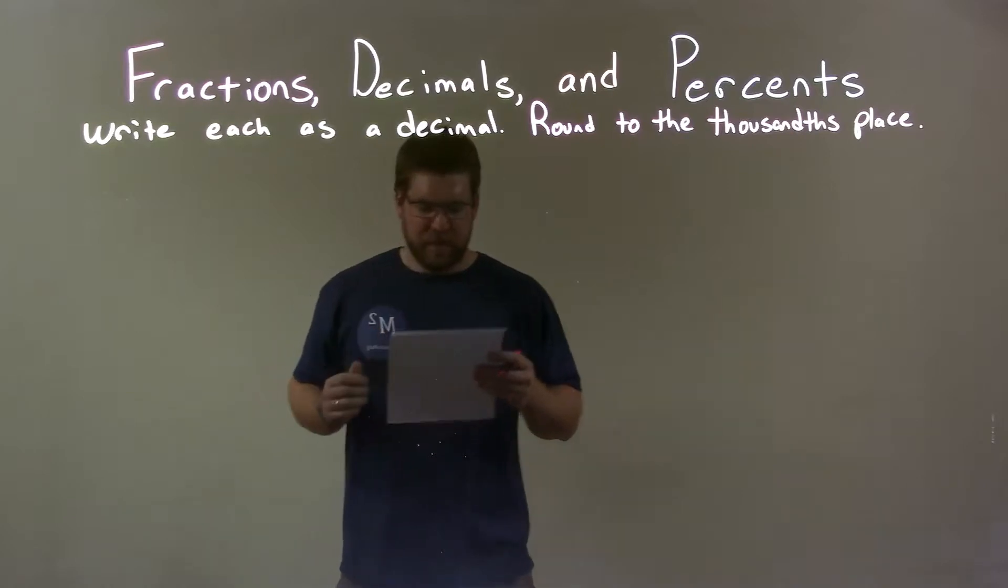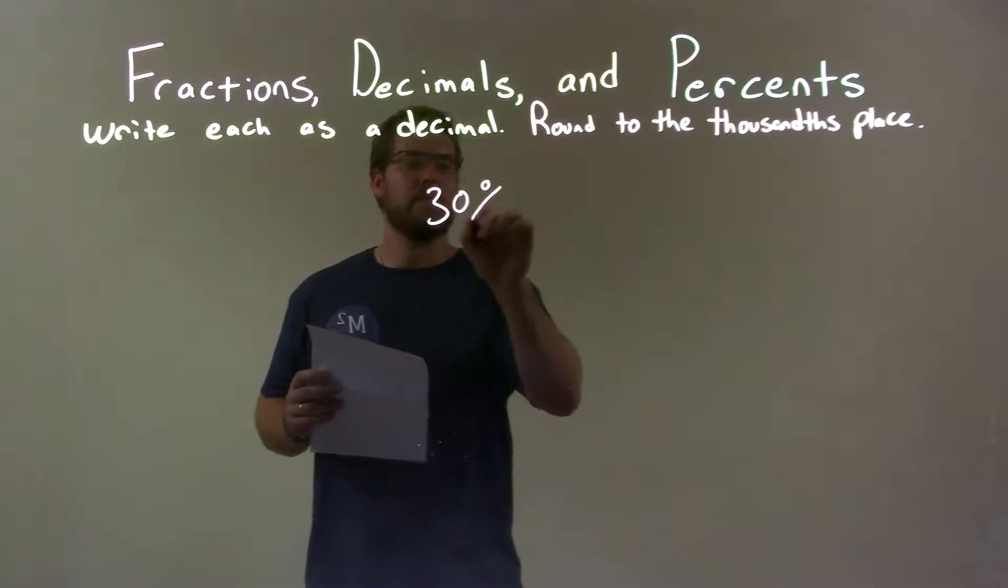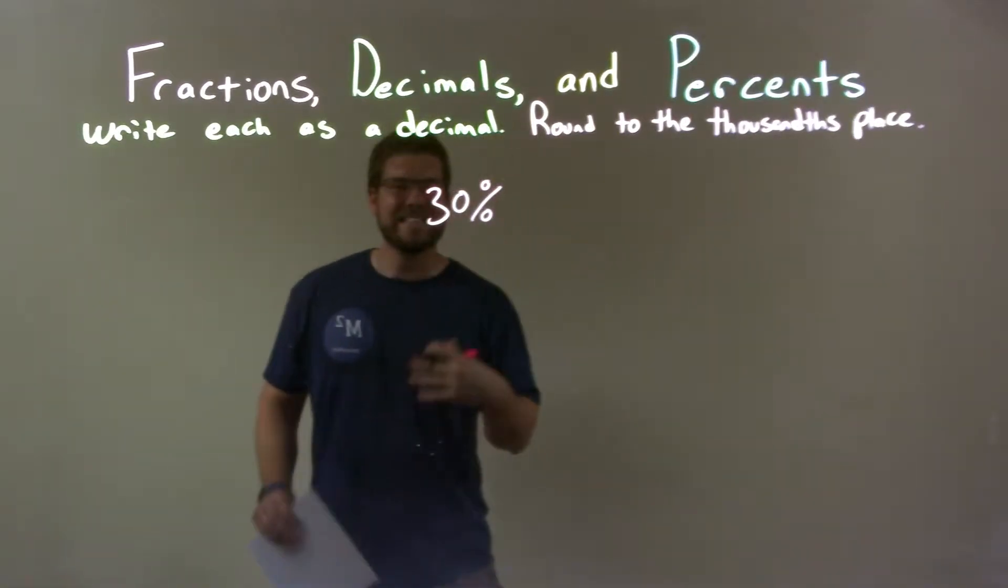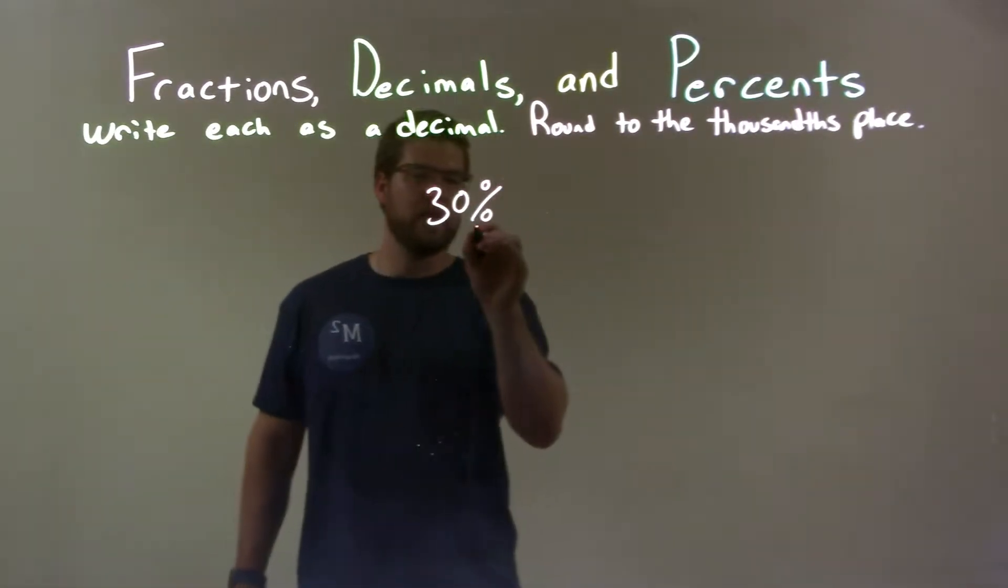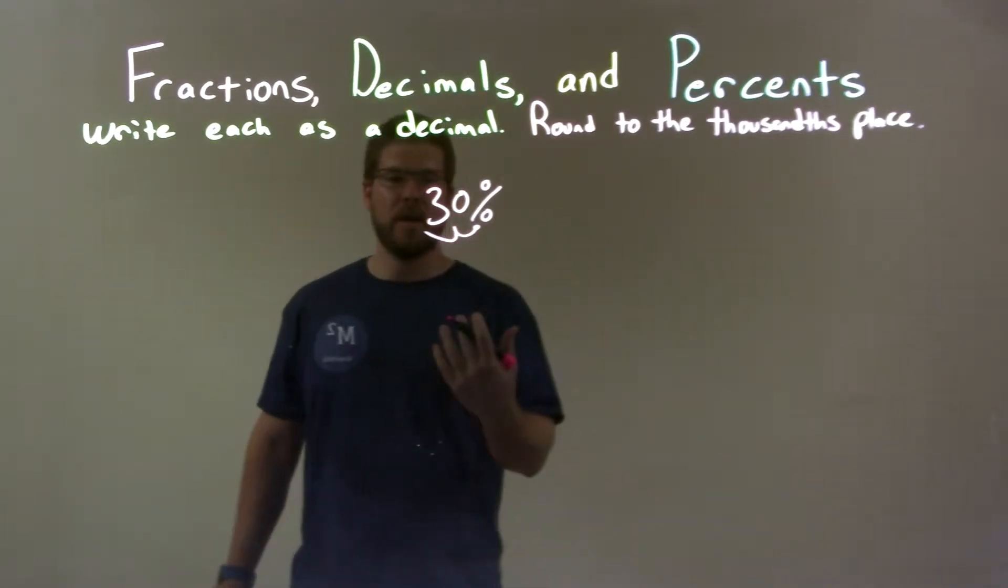So if I was given this percent, 30 percent, well when I say that 30 percent, what I do is I take this spot right there, that's where the decimal is, and move it two spots to the left. That's how you convert that to a decimal.